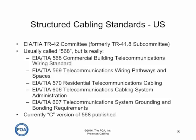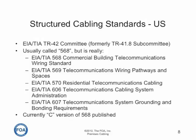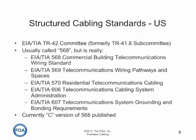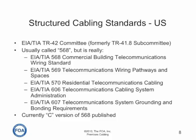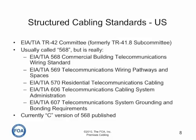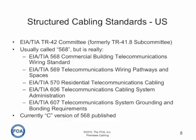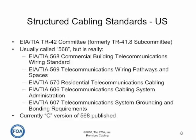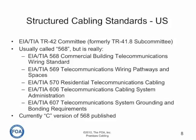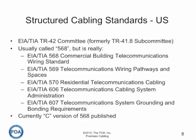In the US, structured cabling is based on work by the EIA-TIA-TR42 committee. It's usually called the 568 standards, but it's really the 568 standard for building telecommunications standards, 569 for wiring pathways and spaces, 570 for residential telecommunications, 606 for administration, and 607 for grounding and bonding requirements. At the current time, 568 is in its C revision, but it's being revised continuously, so you really don't know exactly what each standard is in the latest version unless you're a manufacturer attending the standards committees.